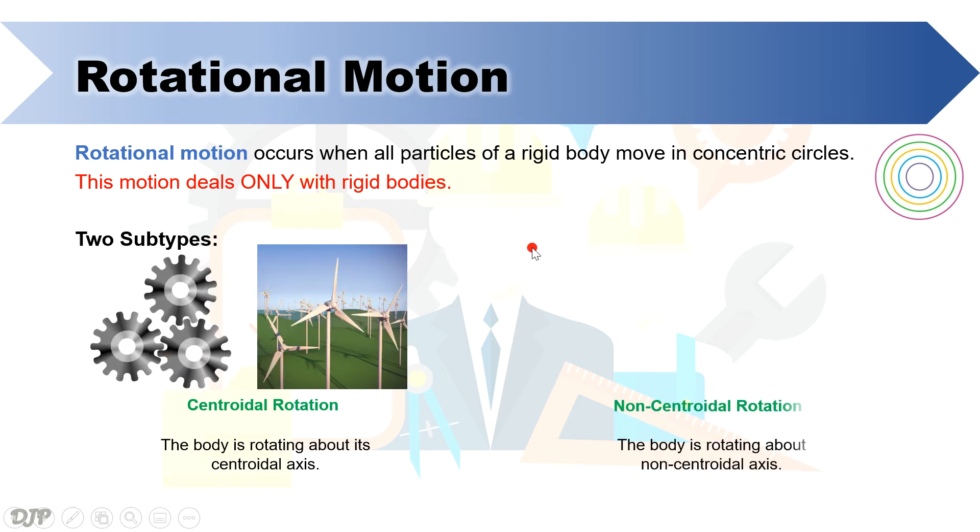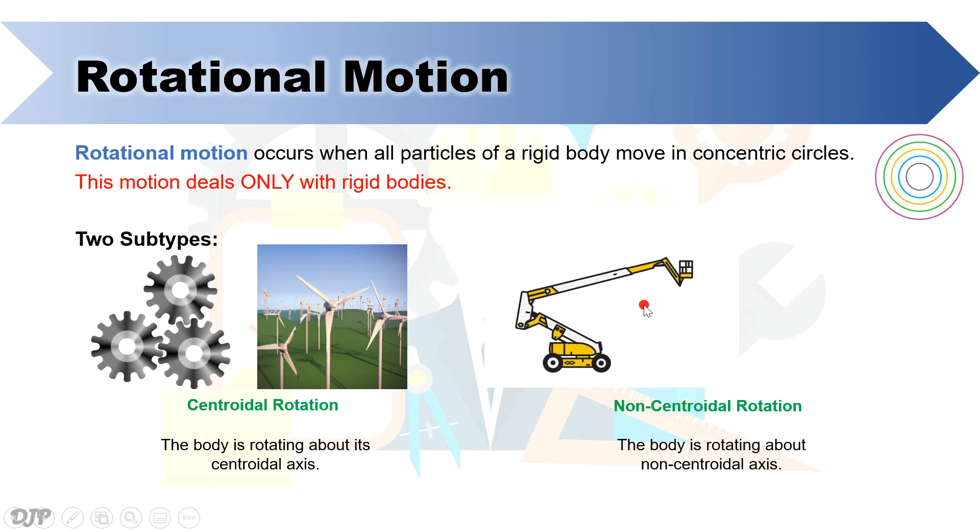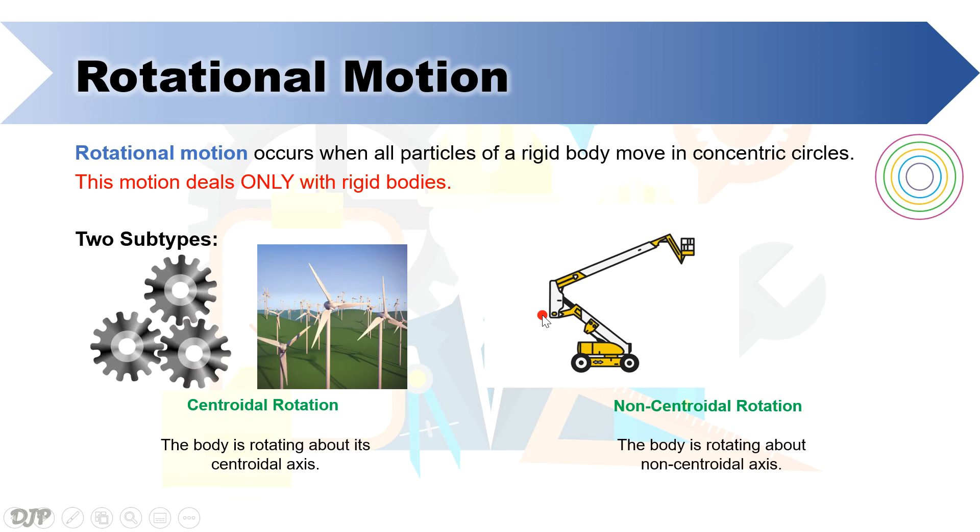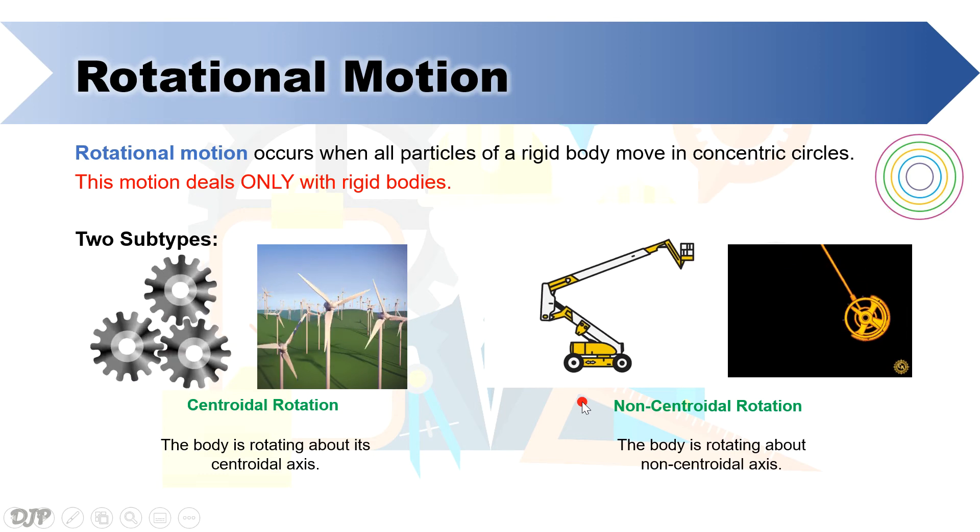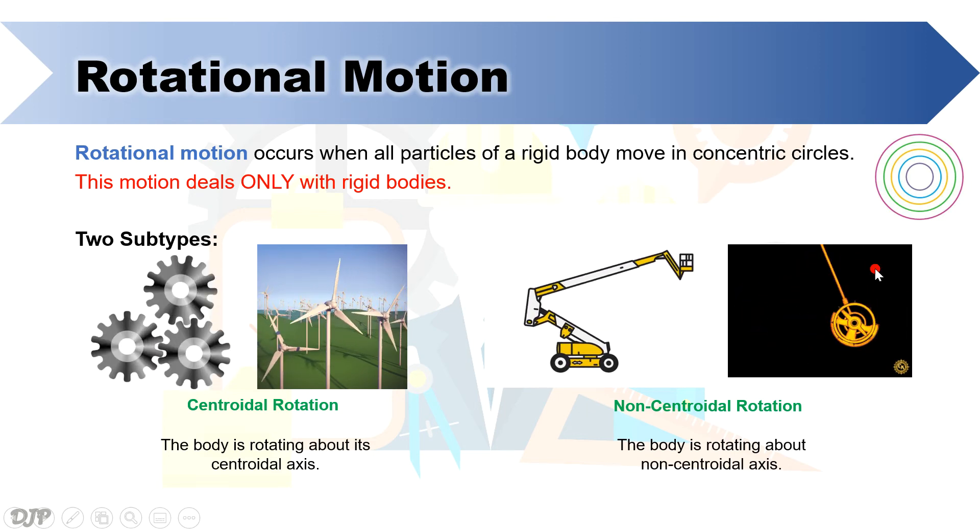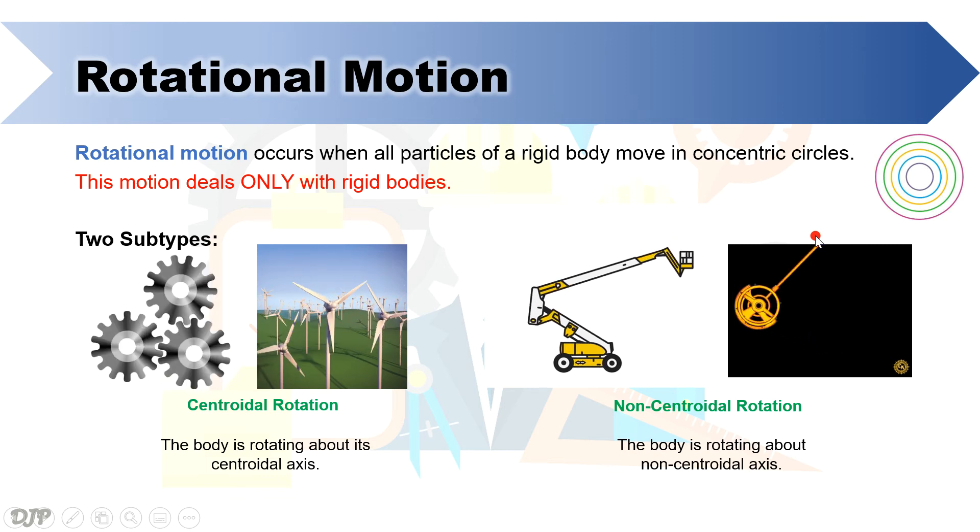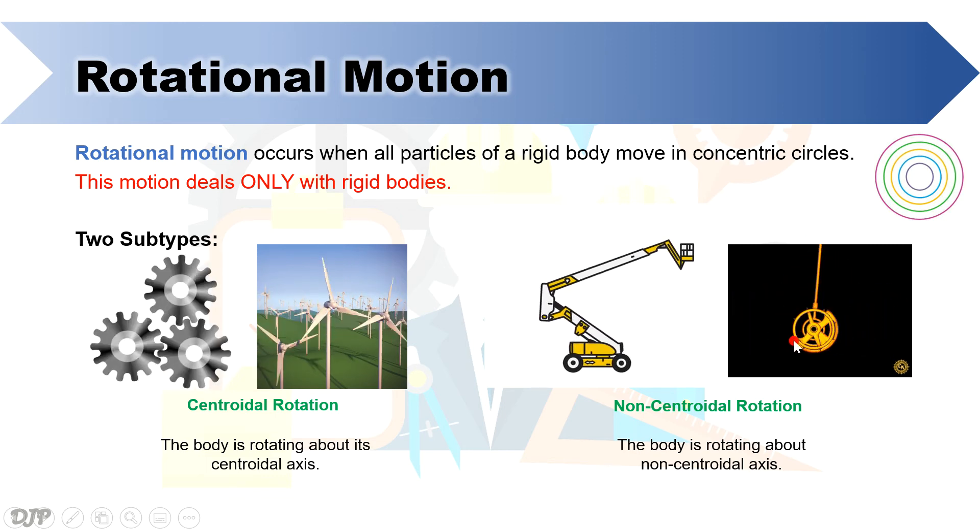The other subtype is non-centroidal rotation, in which, as the term implies, a body rotates about a non-centroidal axis. Examples of that are the rotation of the boom of a lifting crane, where the axis of rotation does not pass through the centroid of the boom, but rather on the joints, as shown in the figure. Another classic example is the pendulum, where the axis of rotation passes through the point on the upper end of the string, rather than on the centroid of the hanging object.